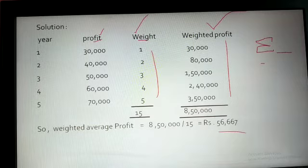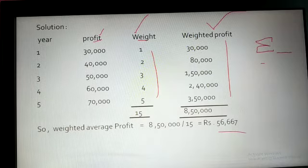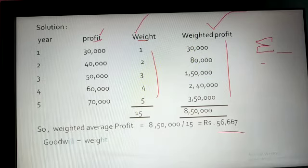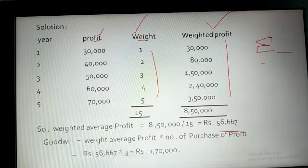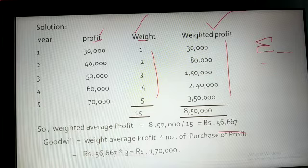Now we have to find goodwill. For goodwill, we need the weighted average profit and the number of years of purchase. In this question, years of purchase is 3, and the weighted average profit we have found is 56,667. Putting it in the formula, goodwill is 3 × 56,667 = 1,70,001. This is our goodwill calculated using the weighted average method.